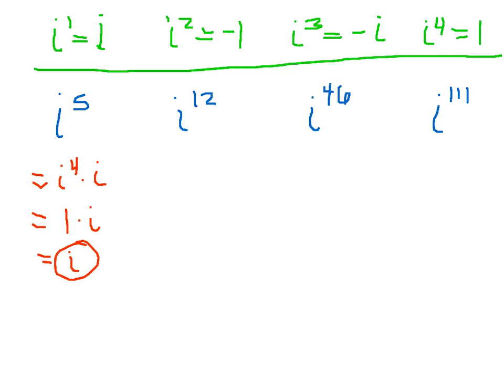i to the twelfth, that is just equal to i to the fourth power raised to the power of 3. Because i to the fourth goes into i to the twelfth three times, so this is 1 raised to a power of 3, which is just 1.